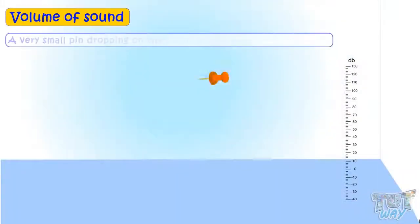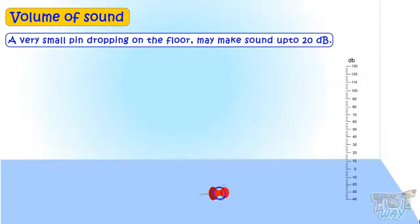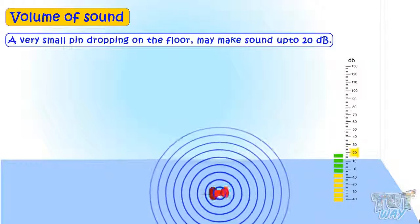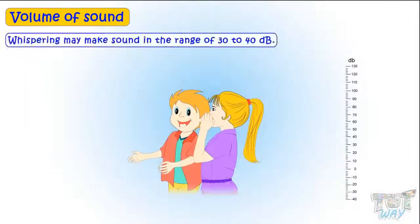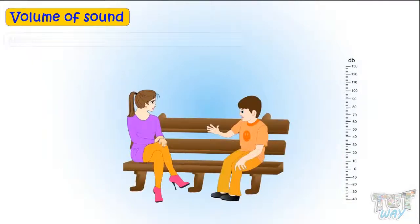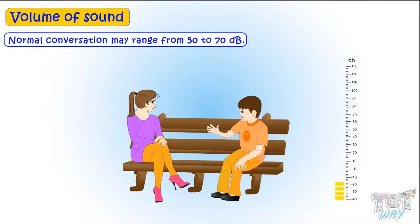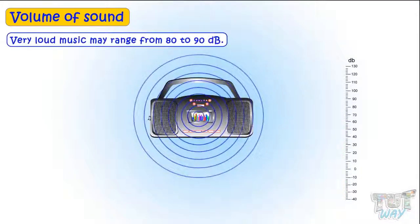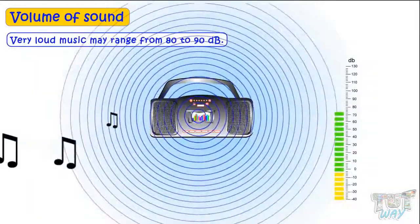A very small pin dropping on the floor may make sound up to 20 decibels. Whispering may make sound in the range of 30 to 40 decibels. Normal conversation ranges from 50 to 70 decibels. Very loud music may range from 80 to 90 decibels.